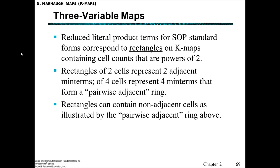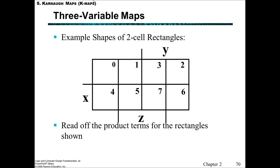More formally, for three-variable maps, the reduced-literal product terms for sum-of-products standard form correspond to rectangles on the K-map, and they contain cell counts that are powers of 2 — either 1, 2, 4, or 8. You won't have a rectangle that goes around 3 terms or 5 terms. Rectangles of 2 cells represent 2 adjacent minterms; 4 cells represent 4 minterms, and they form what's called a pairwise adjacent ring. Rectangles can also span to the other side of the map, so they may not appear adjacent but still are because only one bit changes between them.